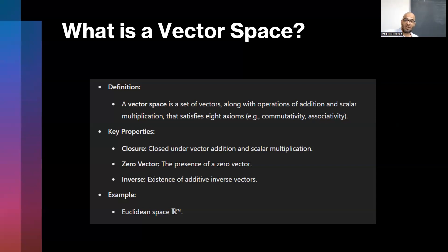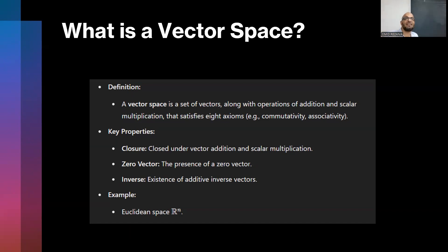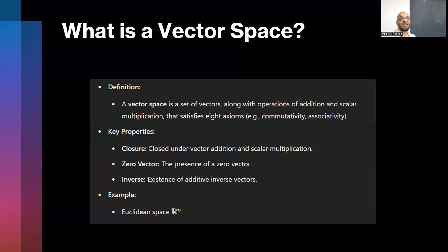We're going to talk about the vector space. Everyone knows what a vector is — you've seen that in high school. For example, if you have two points in space, you connect these two points together, you get a line. But if you assign a direction to that line, you have created a vector. By having at least two vectors, you can create a space that becomes the vector space.